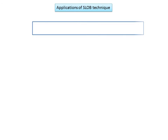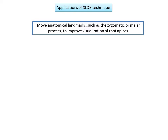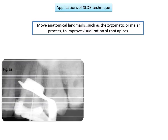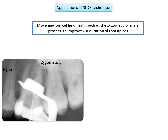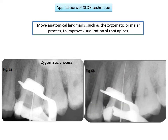Another application is moving anatomical landmarks such as the zygomatic or malar process to improve visualization of root apices. In the first image, the shadow of the zygomatic process completely obscures the apex of the palatal root of the upper first molar. In the second image, after angling the x-ray machine mesiodistally and slightly coronoapically, the shadow is removed and the root canal is easily visualized.